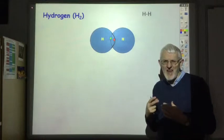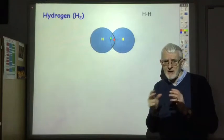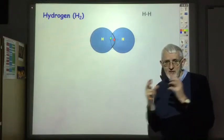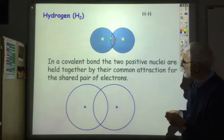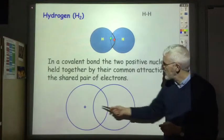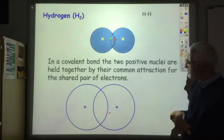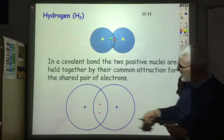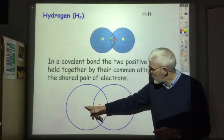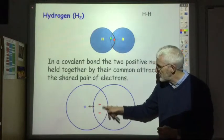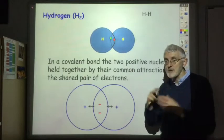You should understand how a covalent bond actually holds the two atoms together. We have two positive nuclei that would normally repel each other, but they are held together by the electrostatic attraction to the shared pair of electrons. So there is electrostatic attraction between each positive nucleus and the shared pair of electrons, and that is what holds the molecule together.